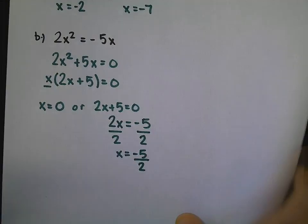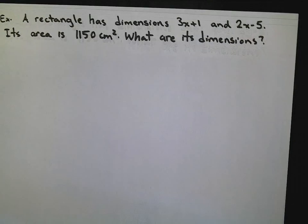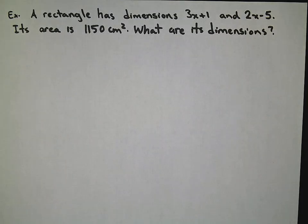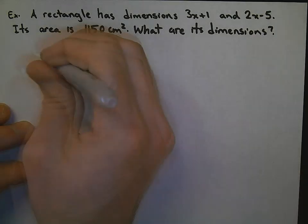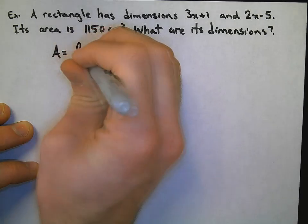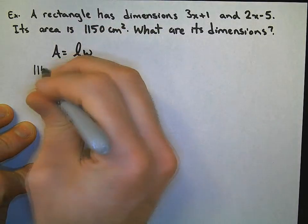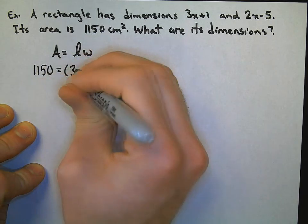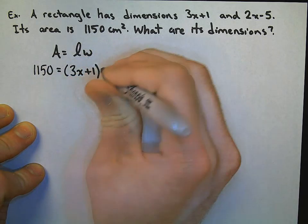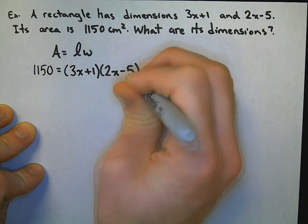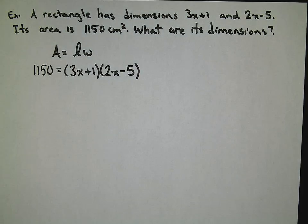Let's look at an actual word problem, which will be similar to what I gave you for homework today. A rectangle with dimensions 3x+1 and 2x-5, and an area of 1,150 centimeters squared. We are asked to determine its dimensions. Remember, area equals length times width. So 1,150 = (3x + 1)(2x - 5).